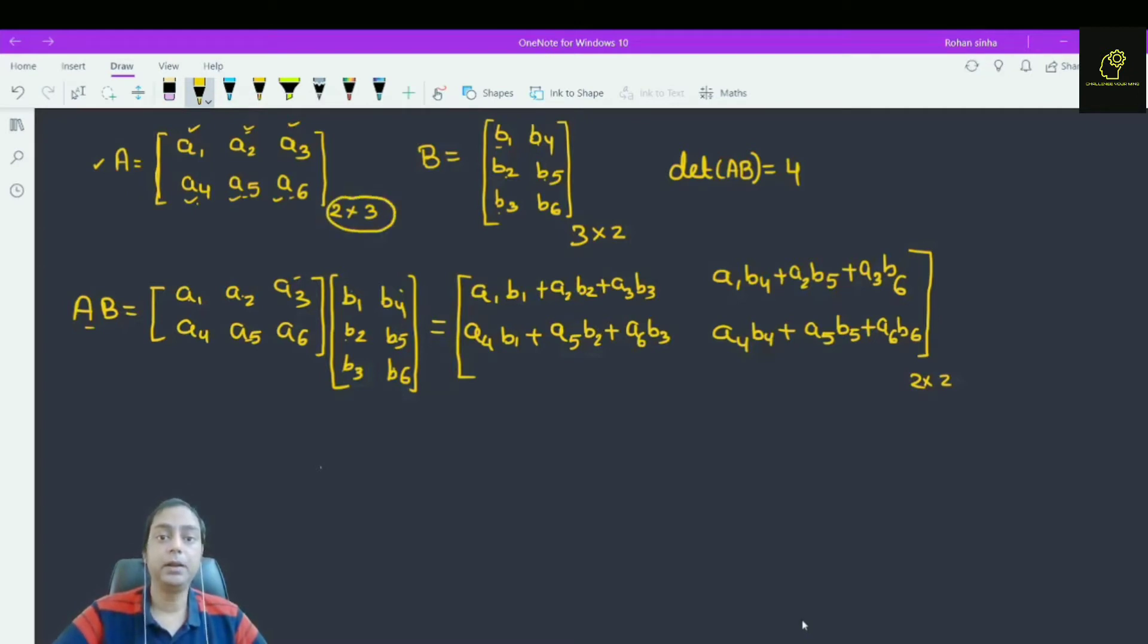And what about matrix B? It is B1, B4, B2, B5, B3, B6. This is a 3 into 2 matrix.